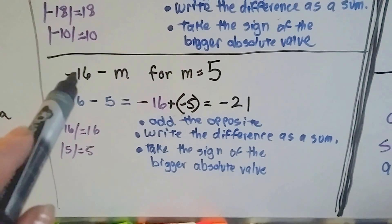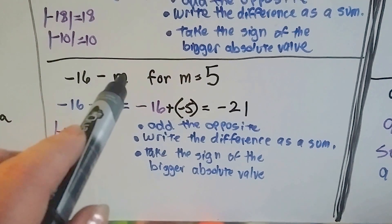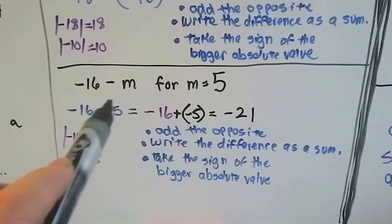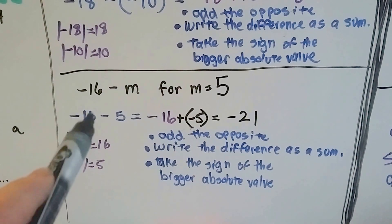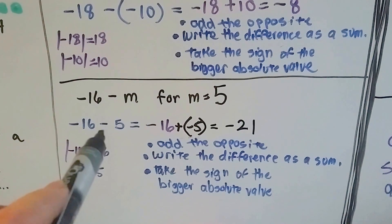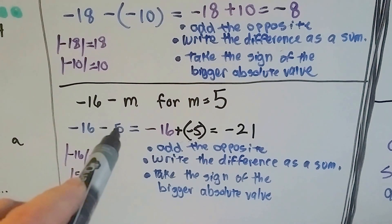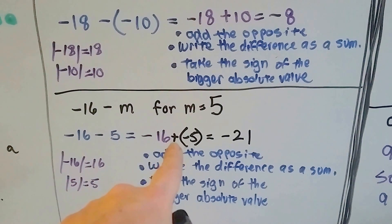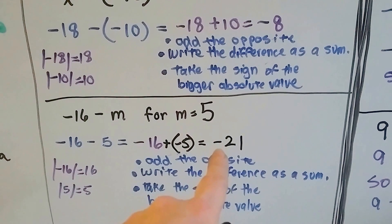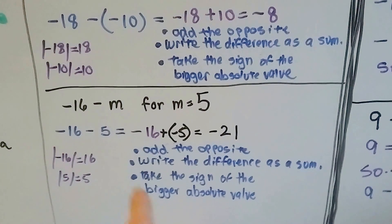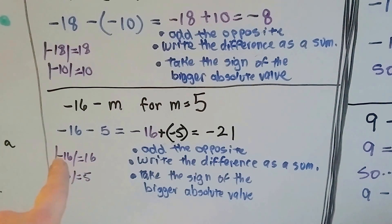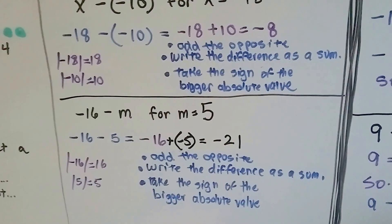Let's try it again. We've got negative 16 minus m, and m equals 5. All we have to do is rewrite it and put the 5 where the m is: negative 16 minus 5. We're going to add the opposite, so instead of subtracting a positive 5, we're going to add a negative 5. Negative 16 and a negative 5 together make negative 21. It takes the sign of the larger absolute value, and 16 was the larger absolute value with a negative, so it's going to be negative 21.